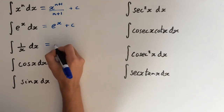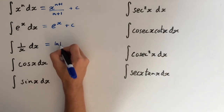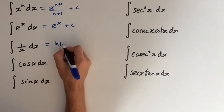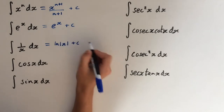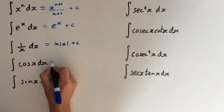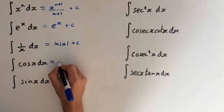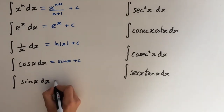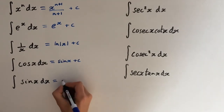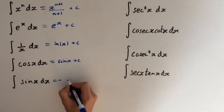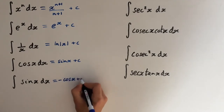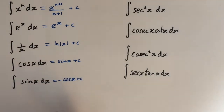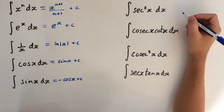The integral of cos of x is sine of x plus c. The integral of sine of x is negative cosine of x plus c. The integral of sec squared of x is just tan of x plus c.